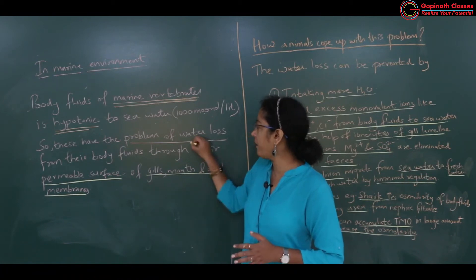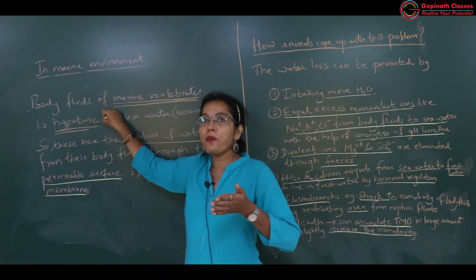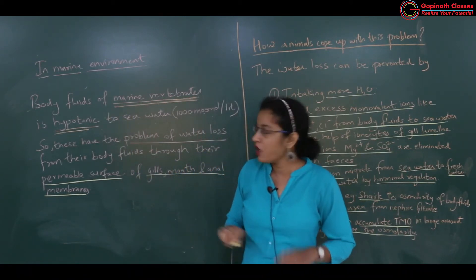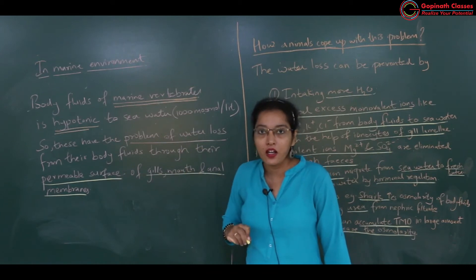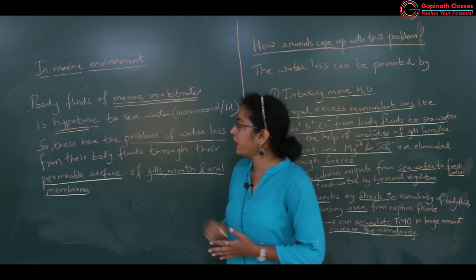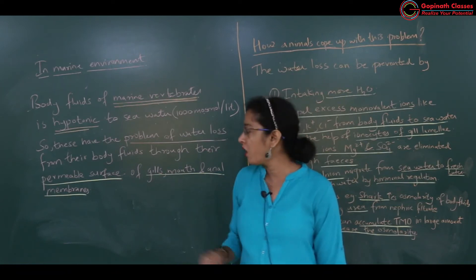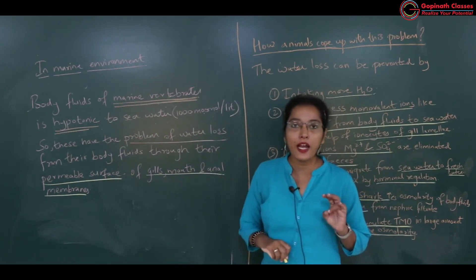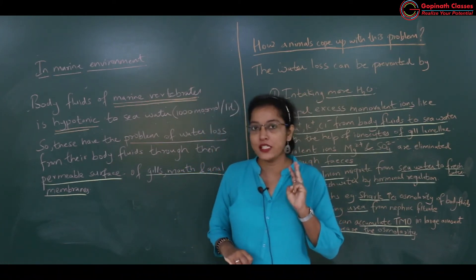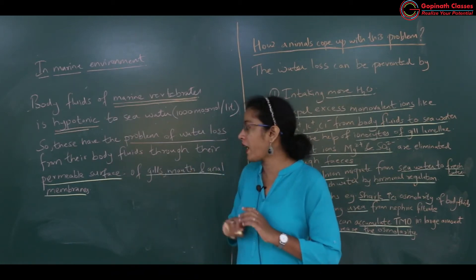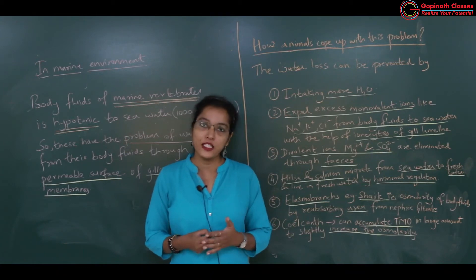These marine vertebrates face the problem of water loss. Because the body fluid is hypotonic, water will move from its higher concentration to lower concentration. Seawater has higher solute concentration, so water will move out of the marine vertebrate's body — through the permeable surfaces of the gills, mouth, and anal membrane. There will be excess loss of water from these three regions.